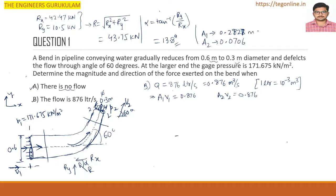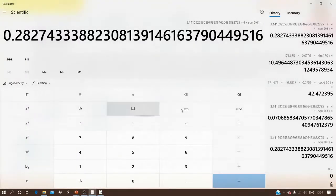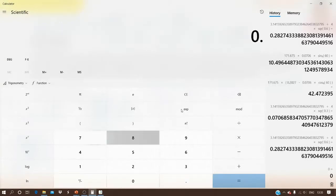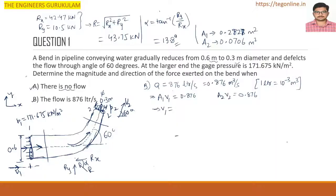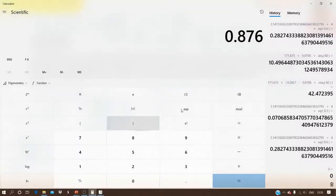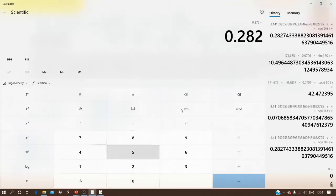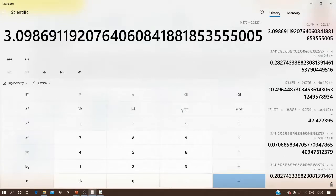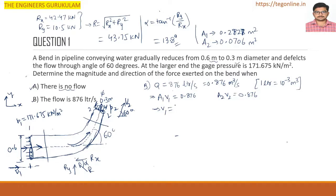Calculating velocities: V1 = Q/A1 = 0.876/0.2827 = 3.099 ≈ 3.1 m/s. V2 = Q/A2 = 0.876/0.0706 = 12.41 m/s.